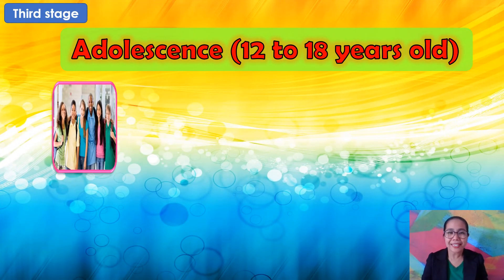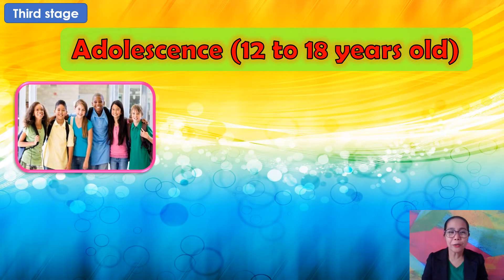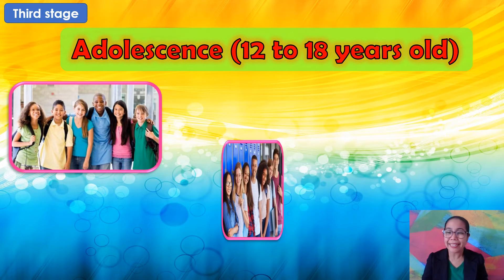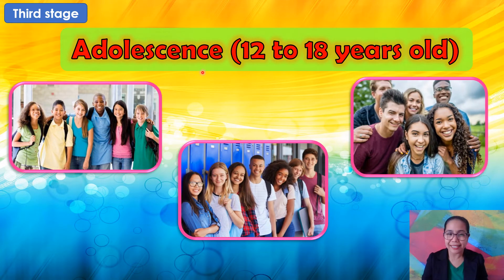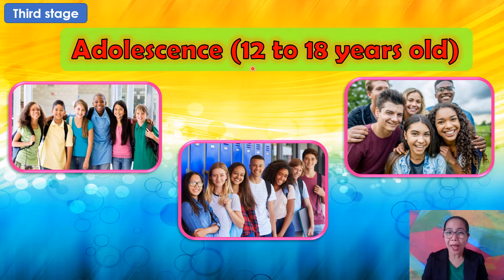The third stage in the human life cycle is adolescence. It's from twelve to eighteen years old. That is the third stage: adolescence.